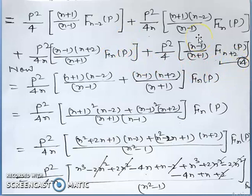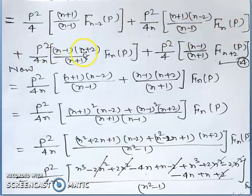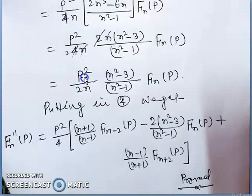Now we simplify. The middle part simplifies to: p²/(4n) * (n²-3)/(n²-1) * fn(p), combining the fn terms from both equations 1 and 2 after substitution.